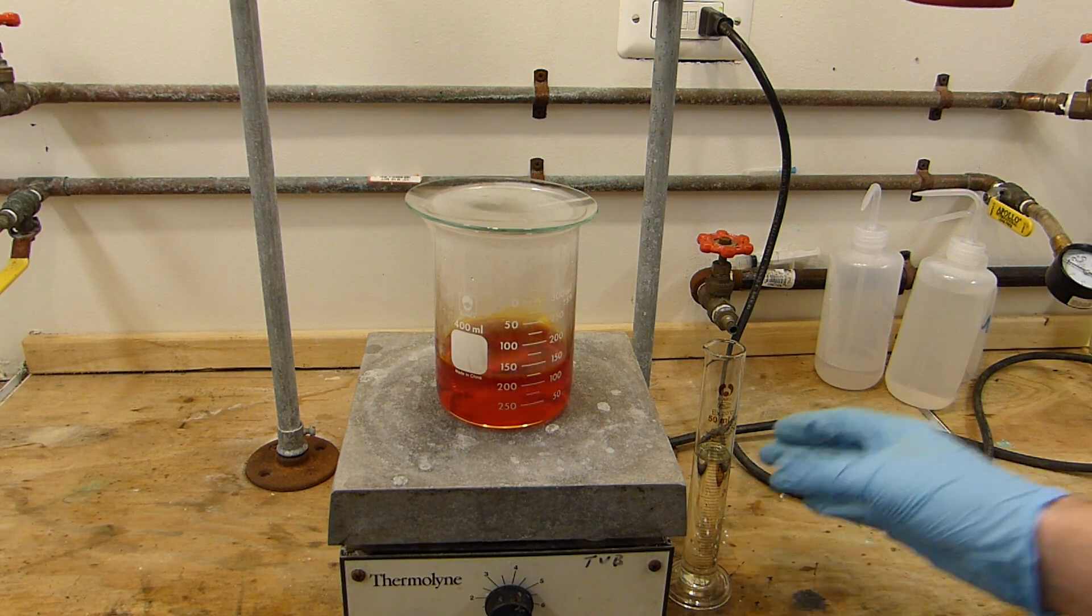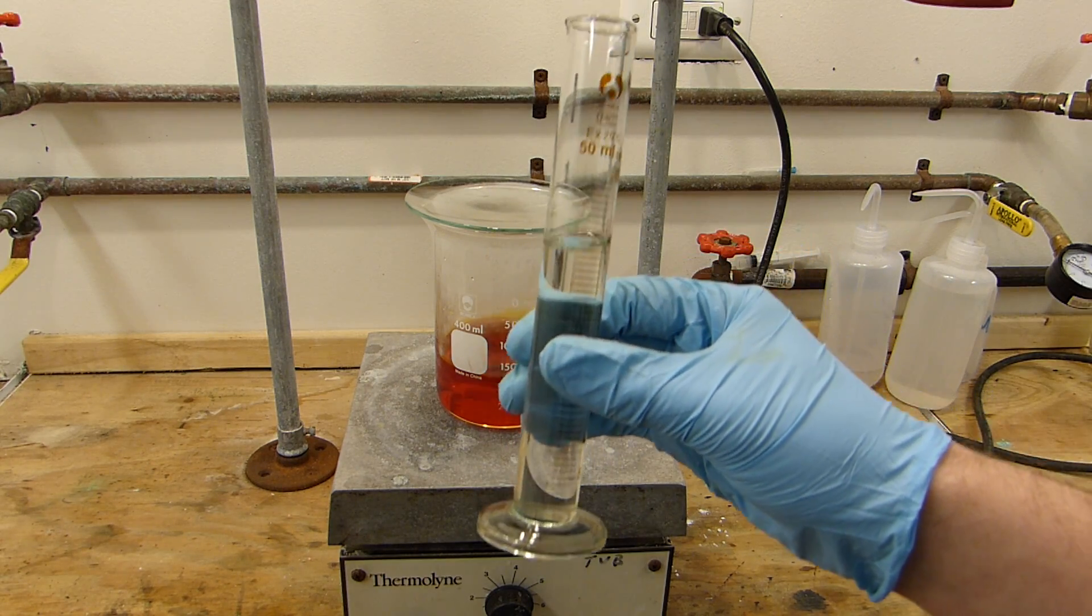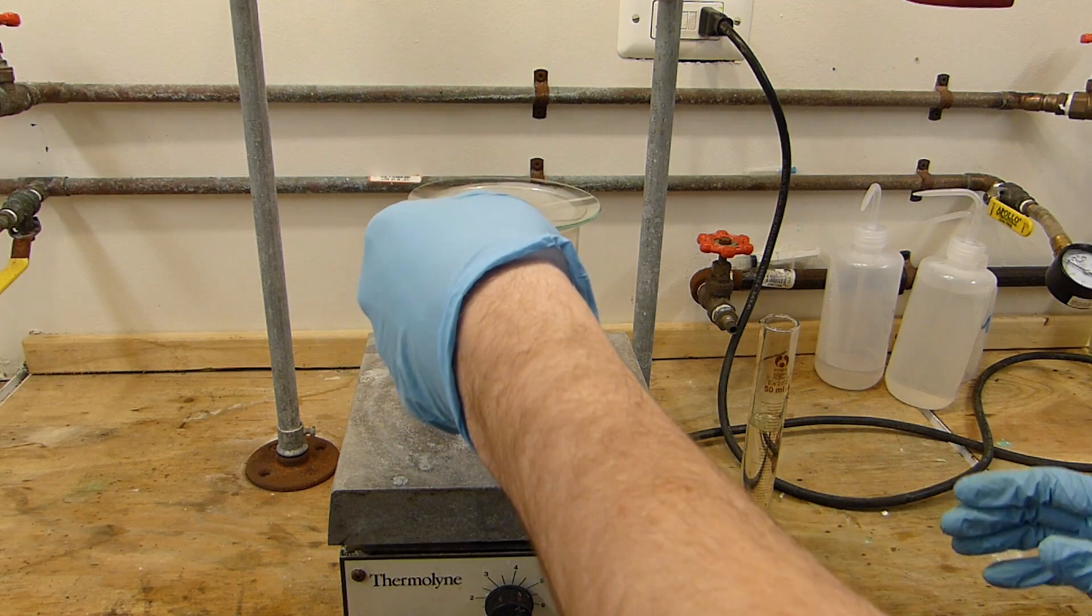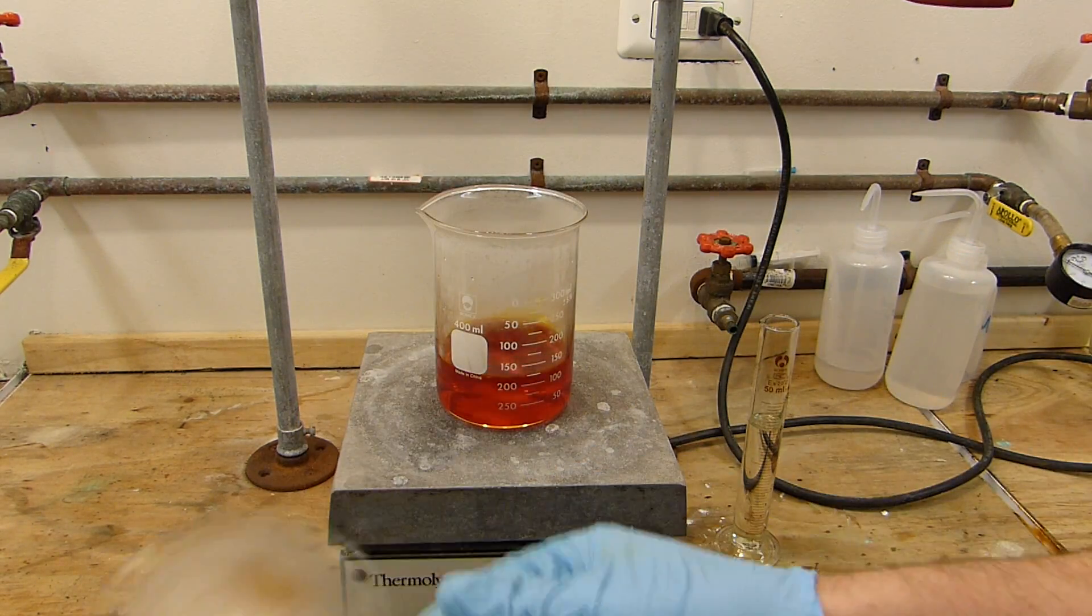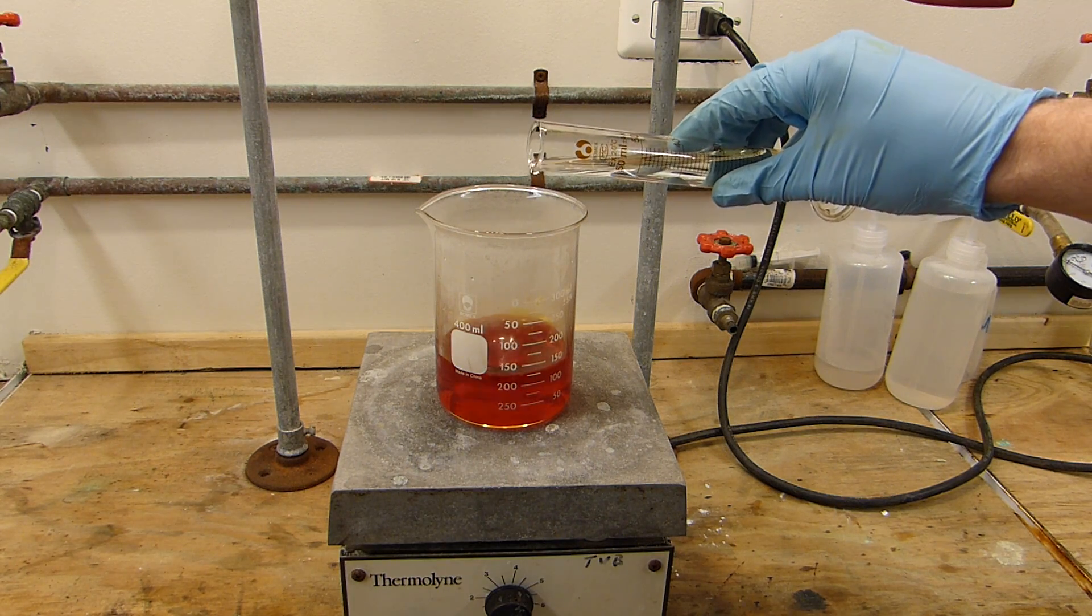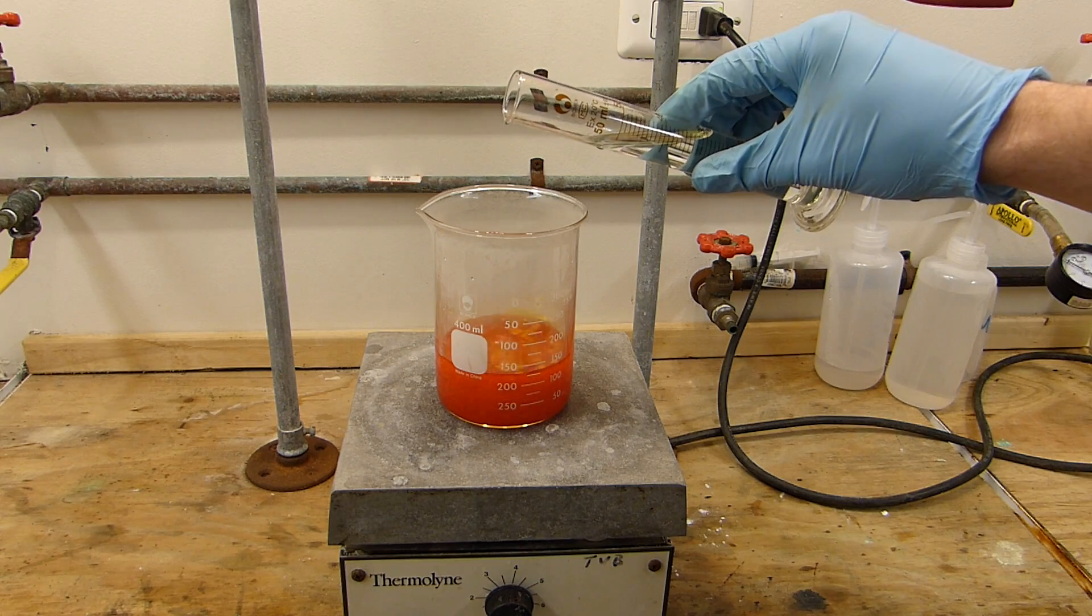And then to it over the course of about 10 minutes I'm going to add 40 milliliters of the pyridine I made in a previous video carefully and with rapid stirring. You can see the pyridinium chlorochromate precipitating.